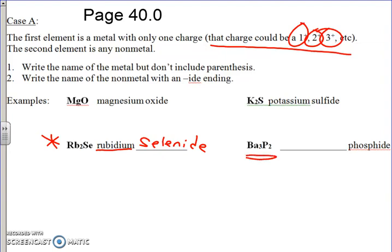In this problem we have barium, which is element 56, and we have phosphorus, which is element 15. So just like the instructions say, we write the name of the metal — barium — and then we write the name of the non-metal with an -IDE ending — phosphide.